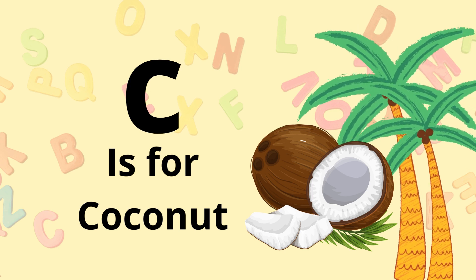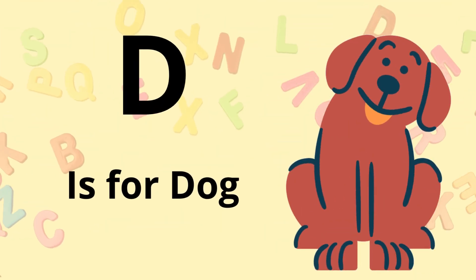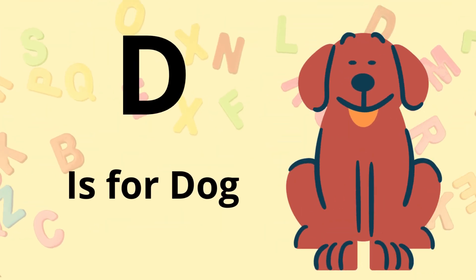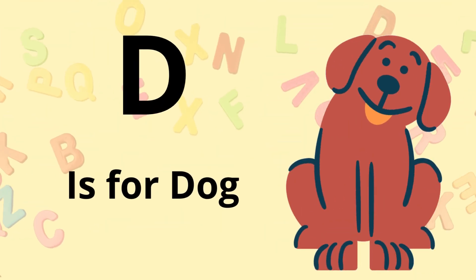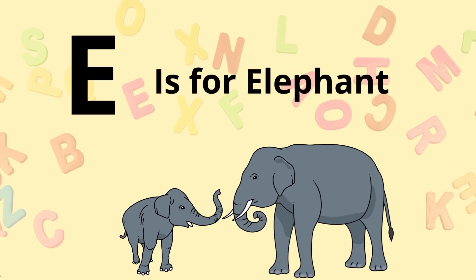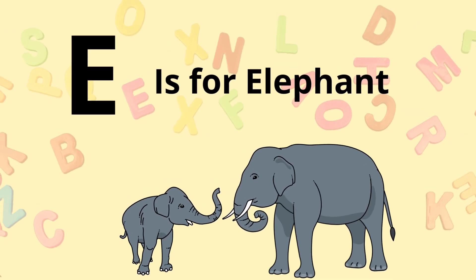Z is for Coconut. D is for Dog. E is for Elephant.